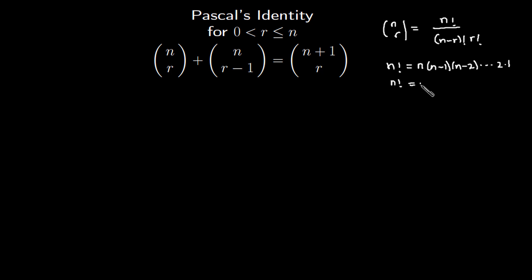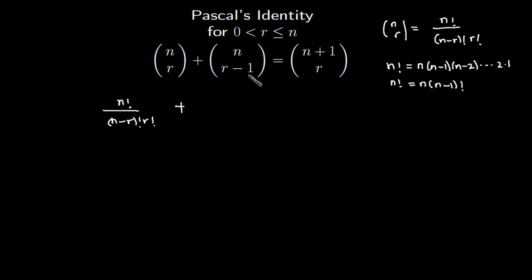You can also write n factorial as n times n minus one factorial. So replacing the definition, the left hand side becomes n factorial over n minus r factorial times r factorial, plus n combination r minus one, which is n factorial over n minus r factorial times r minus one factorial.